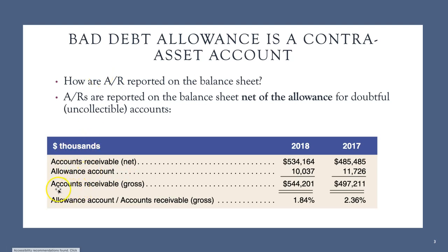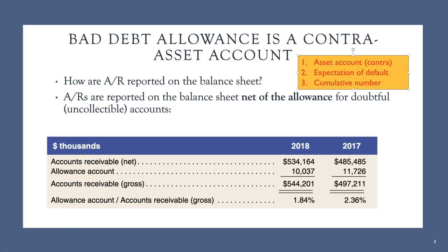The firm has set aside some reserves called the allowances — over $10 million set aside. The total receivables according to the contract, subtracting the expectation of default, gives us the net receivable — what the company would actually expect to receive. The allowances account works against the gross accounts receivable to bring us the net value. It is the expectation that other people would default, and it is a cumulative number accumulated from day one of the company.